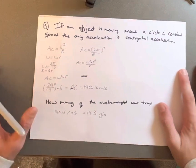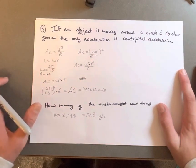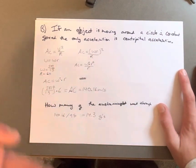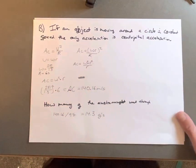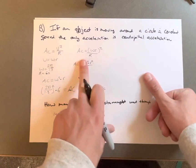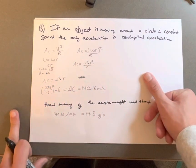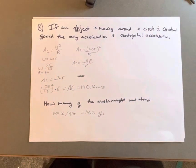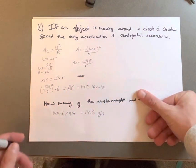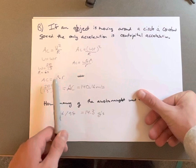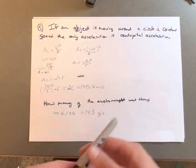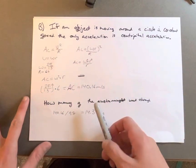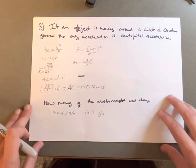We know r is 6 meters, and linear velocity equals angular velocity times r — that's 2π over 1.3 times r. Substituting into the centripetal acceleration formula gives us angular velocity squared times r. After the r's cancel, it's just angular velocity squared times radius. Doing the math, we find centripetal acceleration to be 140 meters per second squared.